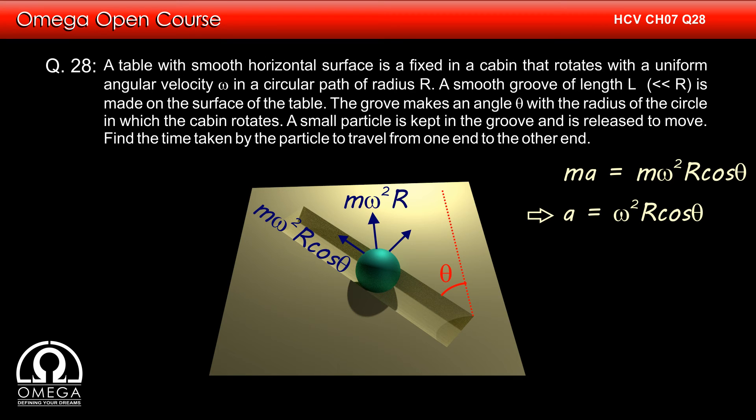Since in the frame of the table, the initial speed of the particle is zero and it travels distance L, half AT square must be equal to L, which implies T is equal to root under 2L by A.